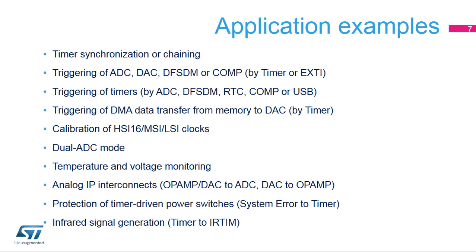The Interconnect Matrix is mostly used for synchronizing or chaining timers — for example, allowing a master timer to reset or trigger a second slave timer; triggering an ADC, DAC, digital filter for sigma-delta modulator or comparator through a timer event or an external interrupt; and triggering a timer through an ADC or DF-SDM watchdog signal when a predefined threshold value is crossed by the analog input.